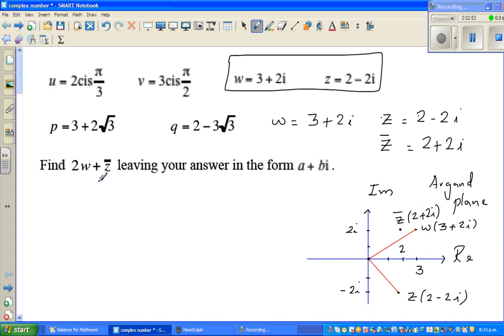The conjugate of Z is the reflection of this point if the real axis is taken as a mirror line. So if you reflect this point, it will be 2 plus 2i. So this is your Z dash which is 2 plus 2i. Now you want to do the arithmetic of multiplying and adding complex numbers.